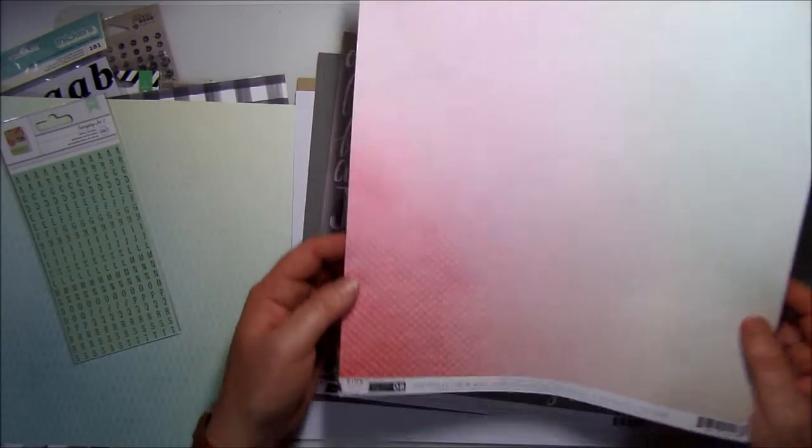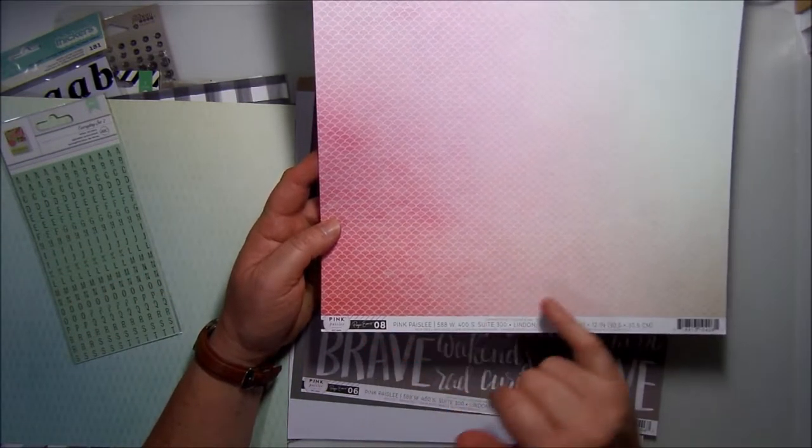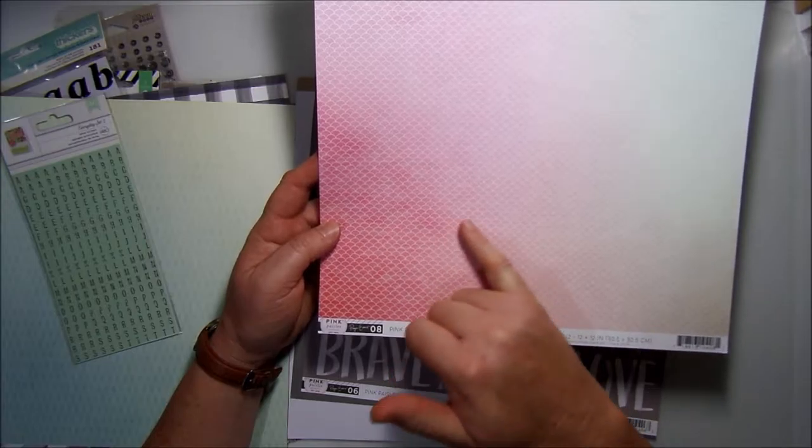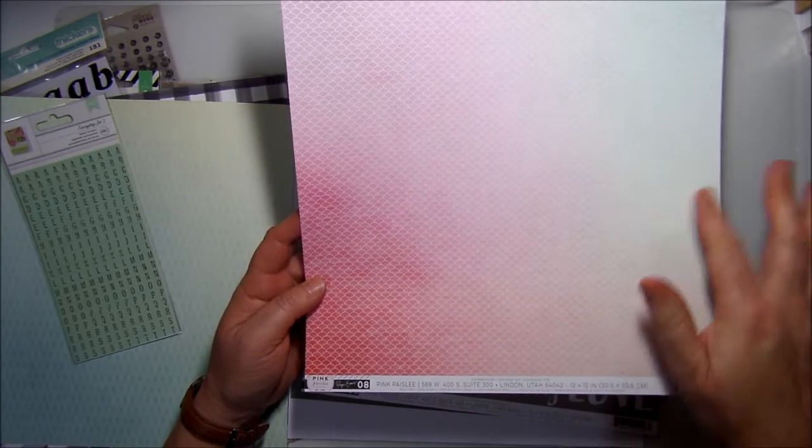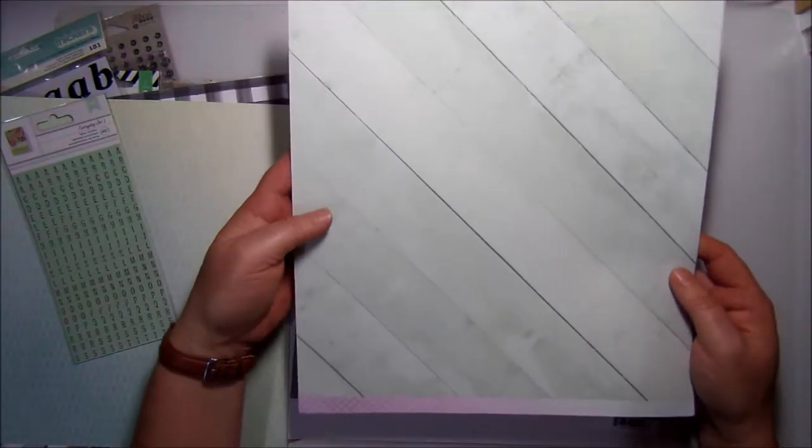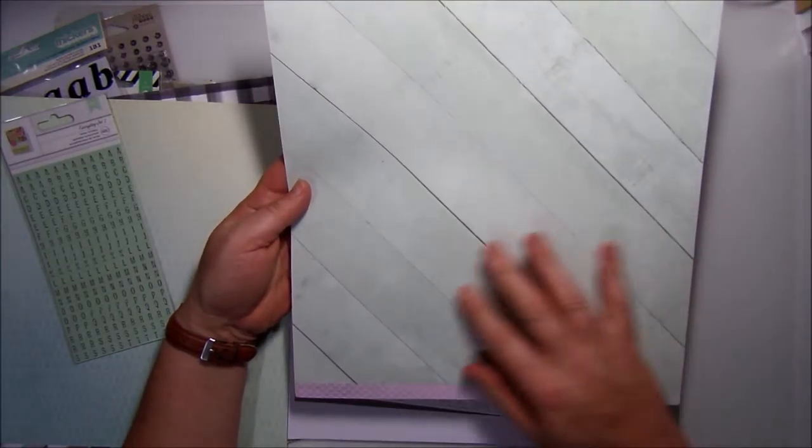Then we have the Pink Paisley Paige Evans number 08. This has a little scalloped effect on it and then you've got your pinks through to your green. And then on this side it is a green wooden flooring sort of like texture which is really nice, almost a bit like decking.